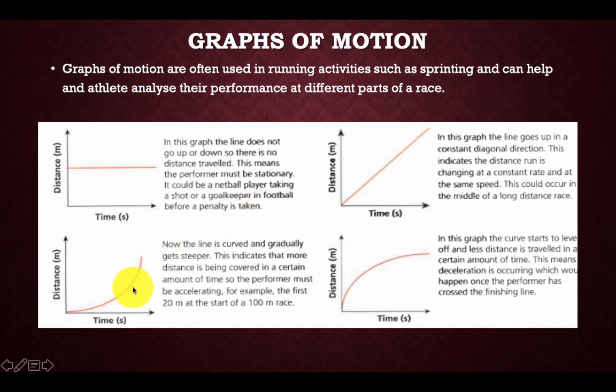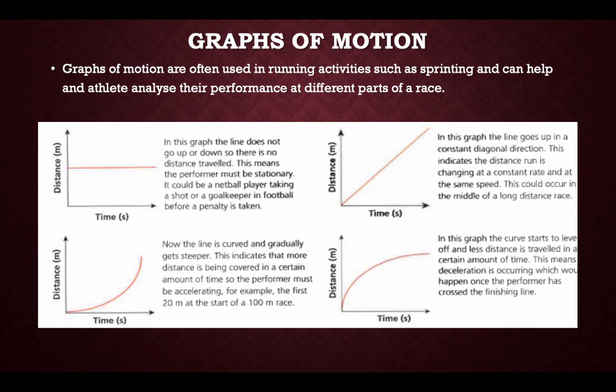In the third example, the line curves and gradually gets steeper, indicating more distance is being covered in a given time — the performer is accelerating, for example in the first 20 metres of a 100 metre race. Finally, the curve starts to level off, meaning less distance is covered over time — deceleration is occurring, which would happen once the performer crosses the finish line.